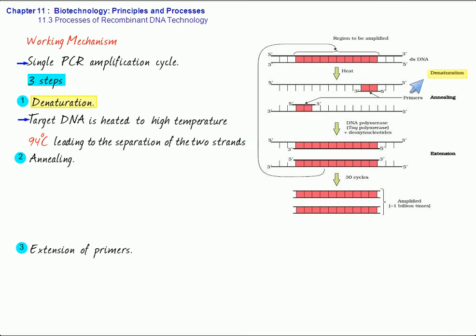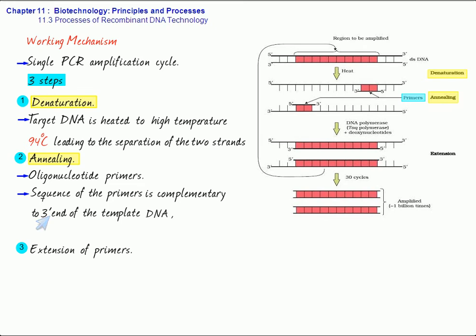After this, we have annealing. In annealing, you can see easily two oligonucleotide primers. They are found, they are annealed or hybridized to each of the single-stranded DNA, which functions like the template. Now, you can see the sequence of the primers is complementary to 3 prime end of the template DNA. You must ensure that the sequence of the primers is complementary. The sequence of the nucleotides of the primers is complementary to 3 prime end of the template DNA. This is done at a lower temperature of about 55 degrees centigrade.